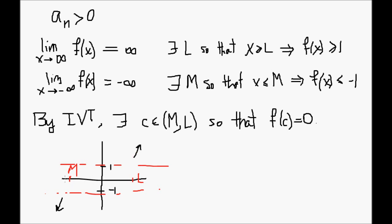So somewhere between M and L, there's got to be some point in between where the graph crosses the x-axis because 0 is between negative 1 and positive 1. So that's the intermediate value theorem.